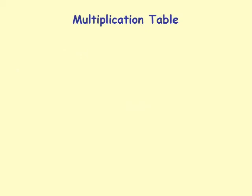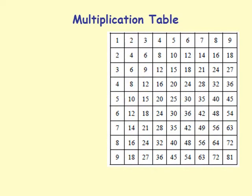Let's look at the multiplication table — the one we all have seen. I got this table from the teacher's manual. The first row is counting by 1, next is counting by 2: 2, 4, 6, 8, 10, etc. That's the table of 2. 2 times 1 is 2, 2 times 2 is 4, 2 times 3 is 6, and so on.